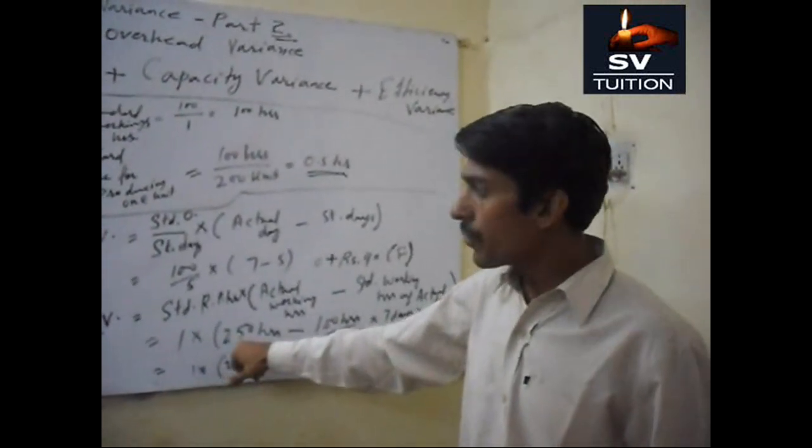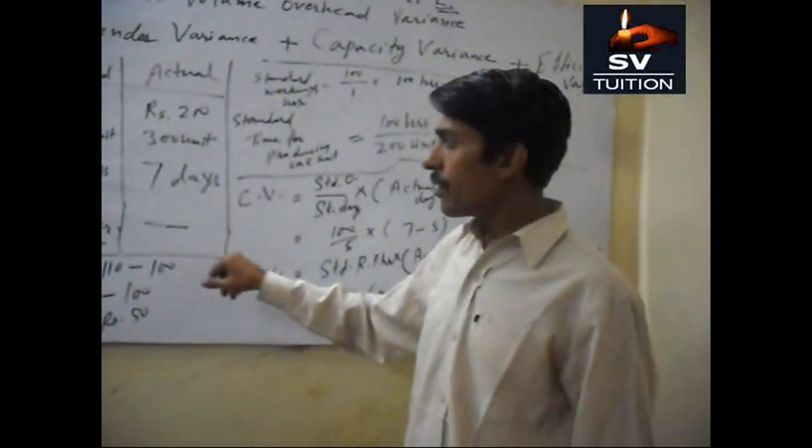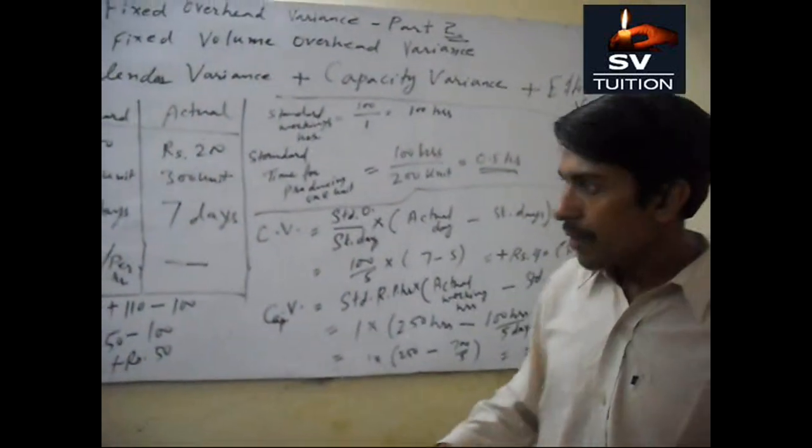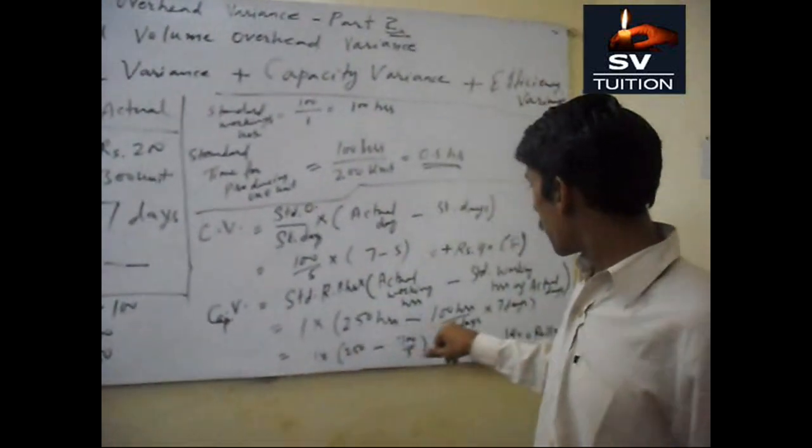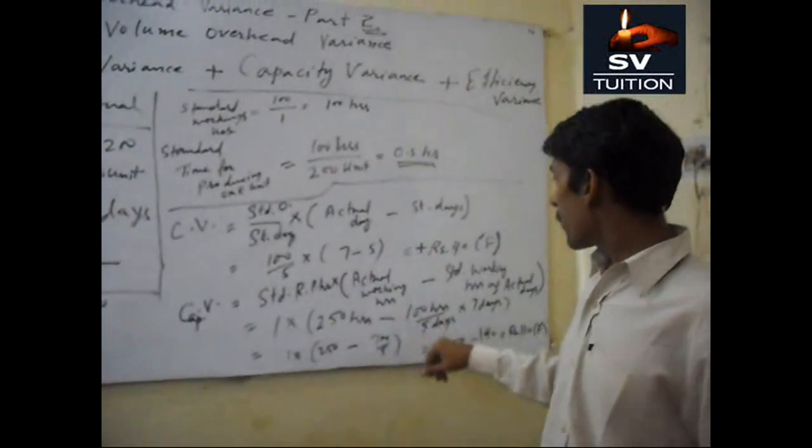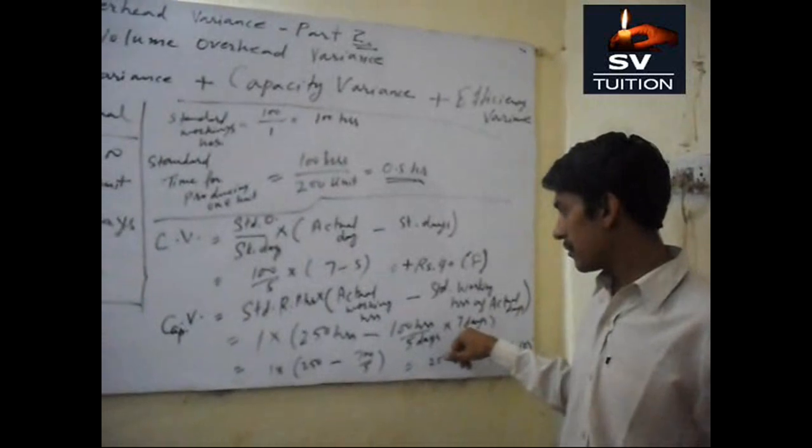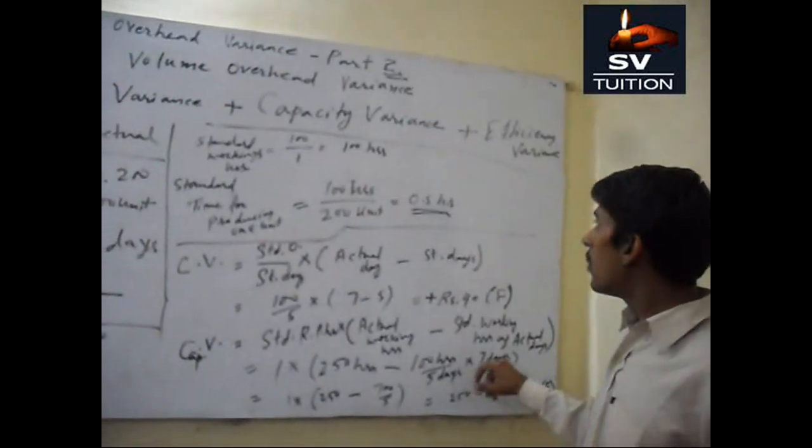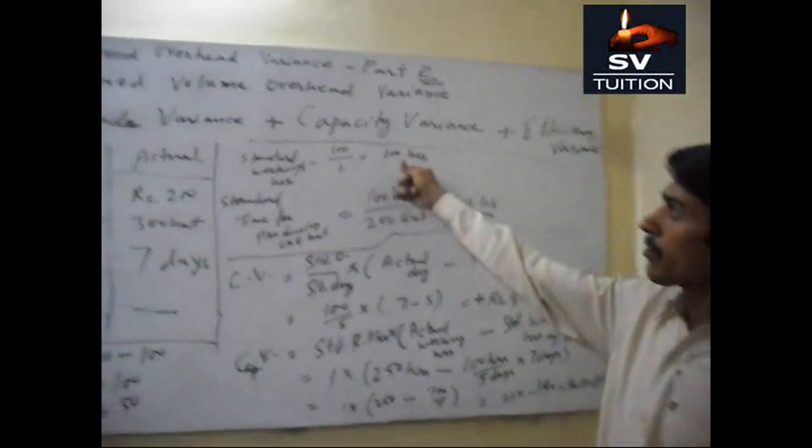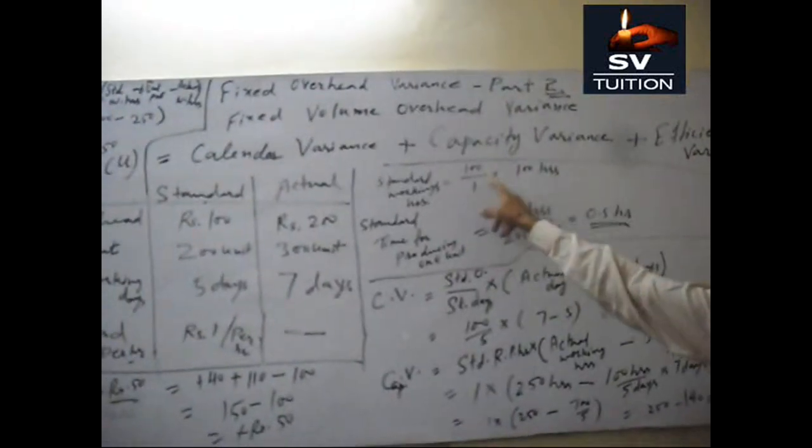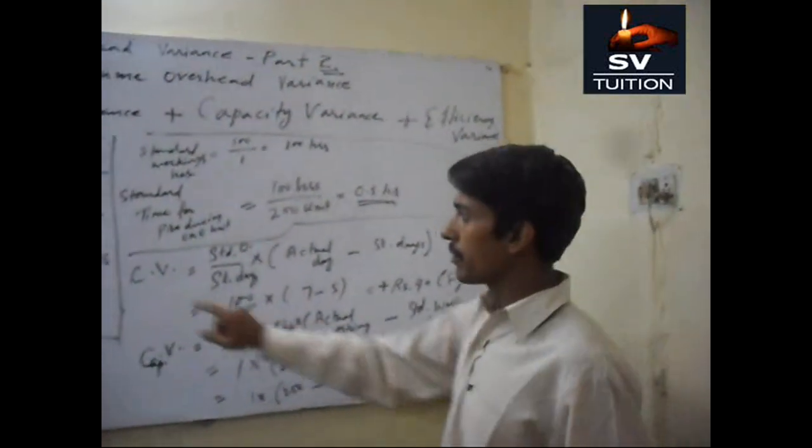It means 250 which is given to us minus 100 divided by 5 into 7 days. This 100 hours we calculate here standard working hours 100 divided by 1 and multiply with 7 days.